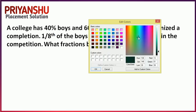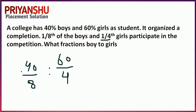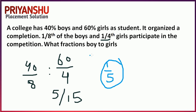Next question: a college has 40% boys and 60% girls. Students organized a competition where 1/8 of the boys and 1/4 of the girls participated. Find the fraction of boy participants to girl participants. Boys participating: 40÷8=5. Girls participating: 60÷4=15. Ratio = 5:15 = 1:5.